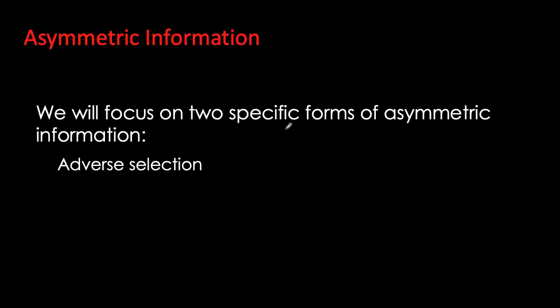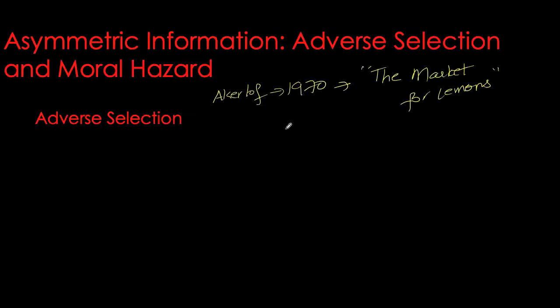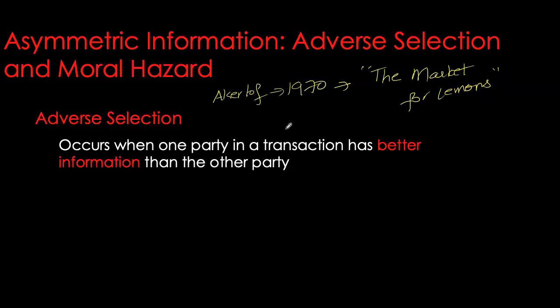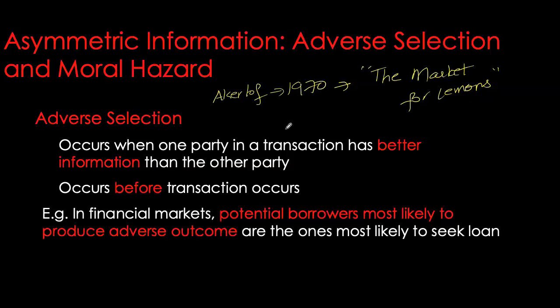In fact, information is not the same across parties — one party has more information than the other — and this imbalance of information is referred to as asymmetric information. There are two specific types: the first is adverse selection, and the second is moral hazard. Adverse selection was pointed out for the very first time by George Akerlof in 1970 in a seminal paper, 'The Market for Lemons.' Adverse selection is primarily when we have an information imbalance before the transaction occurs. A common example is in financial markets: if the lender does not know your true quality as a borrower, he or she might be reluctant to lend funds.